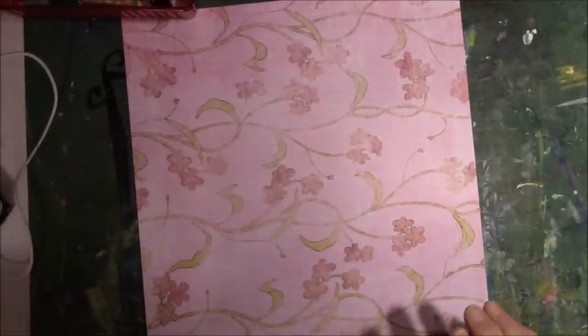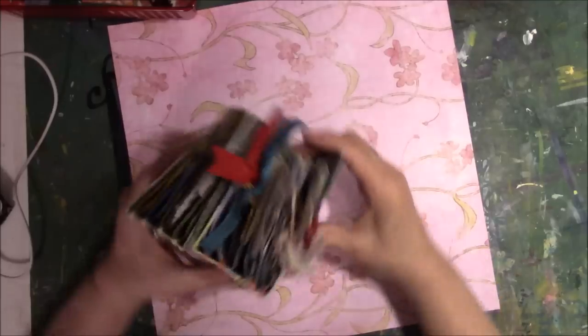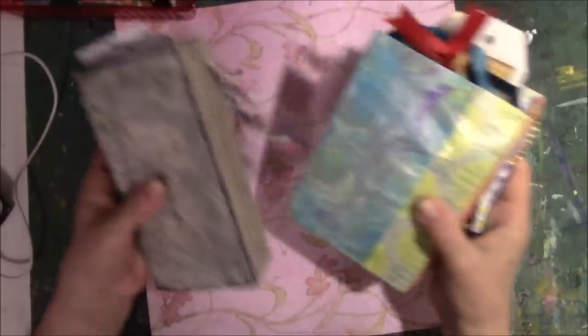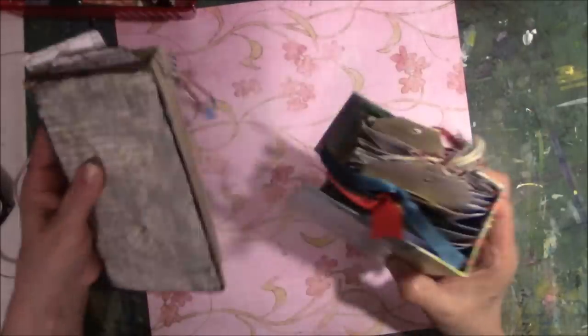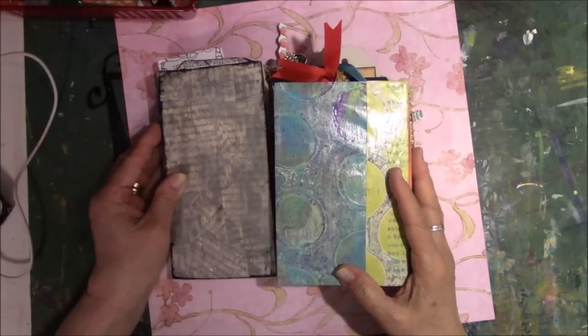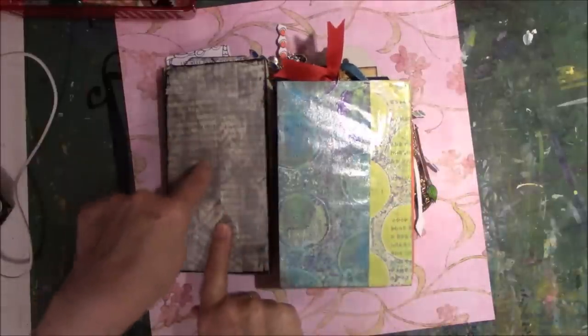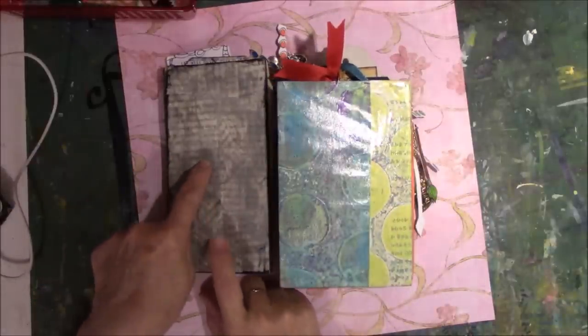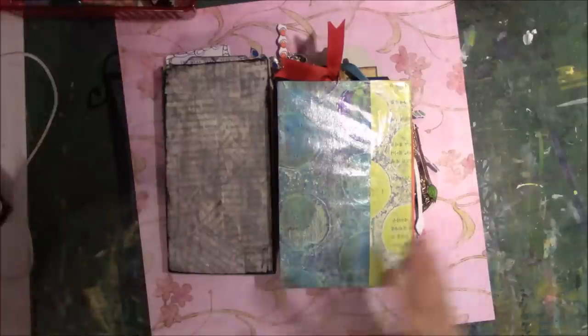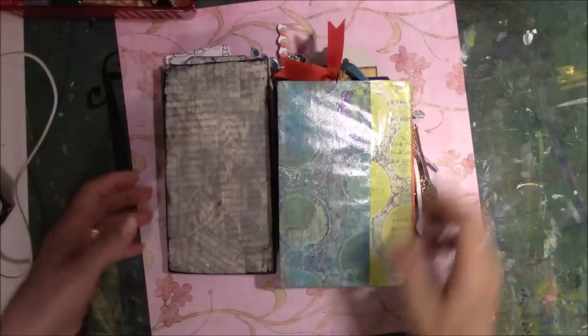You can see these are in different binders or different books. One of these is taller than the other. This is the 12x12 and I think this is a 12x14 or 12x16 - the pockets made from the original piece of paper was 12x16.